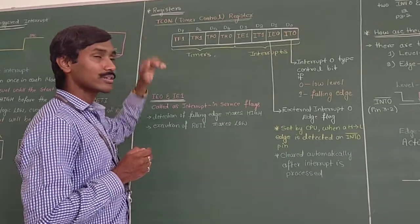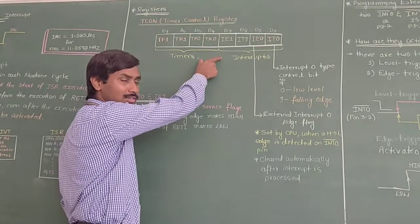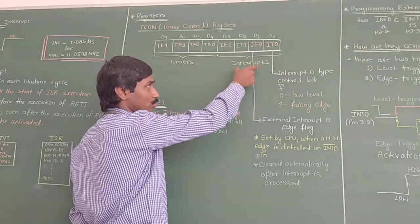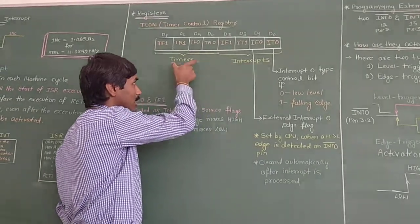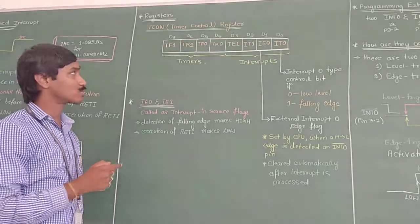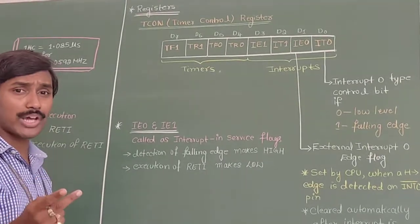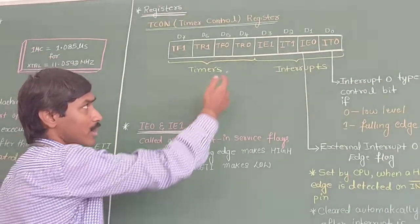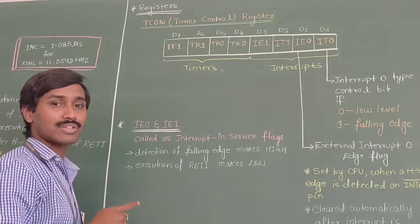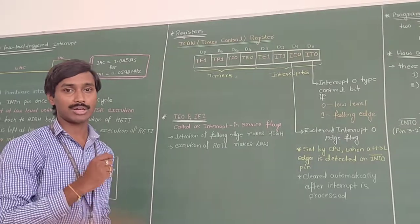The Timer Control Register, referred to in short as the TCON register, is an 8-bit, bit-addressable register. Out of the complete 8 bits, the lower 4 bits are dedicated for interrupt applications and the upper 4 bits are dedicated for timer applications. The upper 4 bits — covering timer overflow flag and timer run control bits for Timer 0 and Timer 1 — have already been discussed in the previous module.